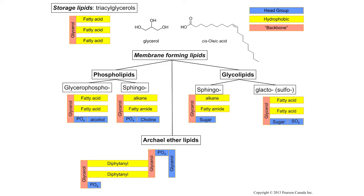Some organisms do not use a bilayer and instead have monolayer lipids. That's shown here as our archaea ether lipid. In archaea, some lipids which help to add stability, instead of having a single head group, have head groups on either end of the hydrophobic core, and this helps to stabilize the bilayer.